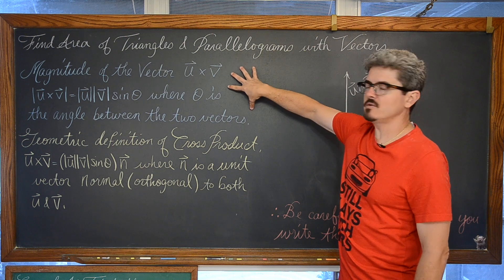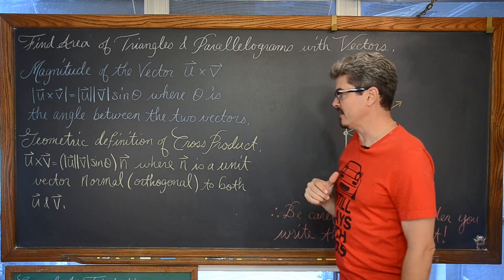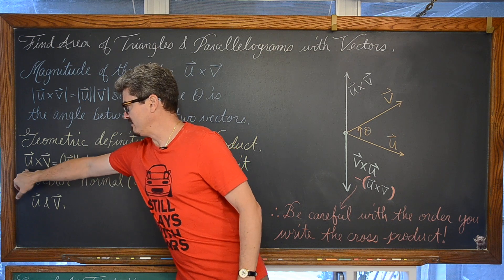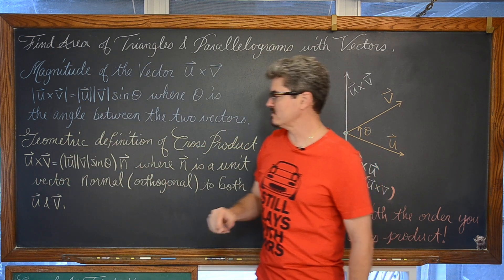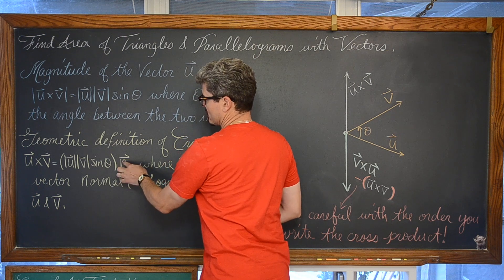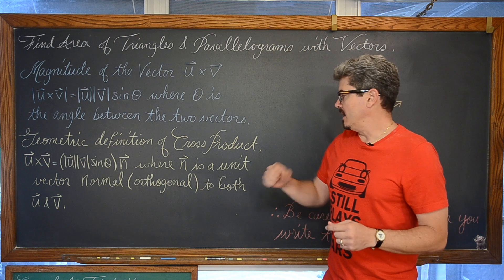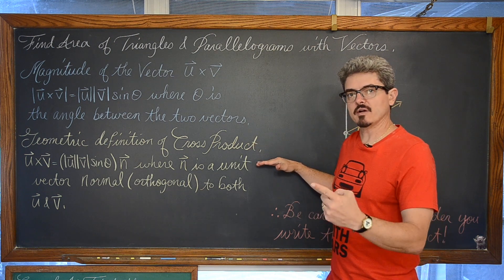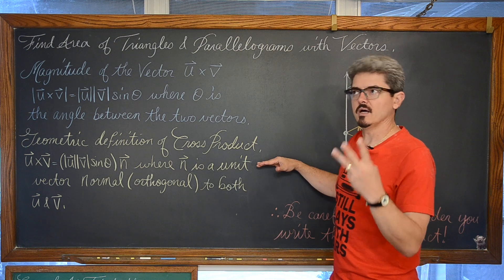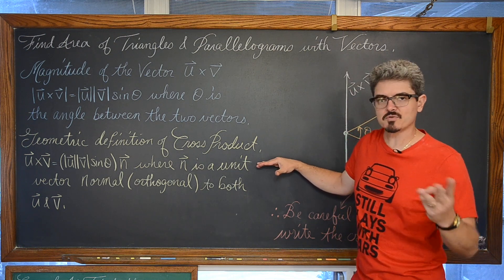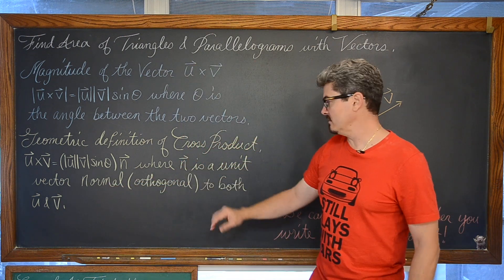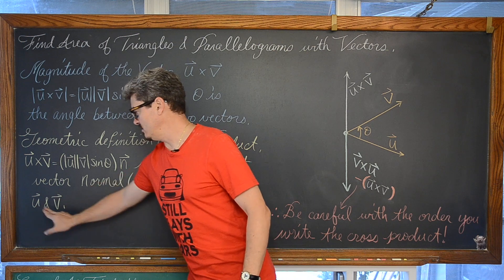That definition for the magnitude of the vector which is the cross product of two other vectors leads us into the geometric definition of a cross product: the cross product between vector u and v is equal to the magnitude of vector u times the magnitude of vector v times the sine of theta, in front of this vector n, which is a normal unit vector. Vector i is a unit vector in the direction of the x axis, vector j in the y axis, vector k in the z axis, and n is a unit vector normal — orthogonal, perpendicular — to both vectors u and v.